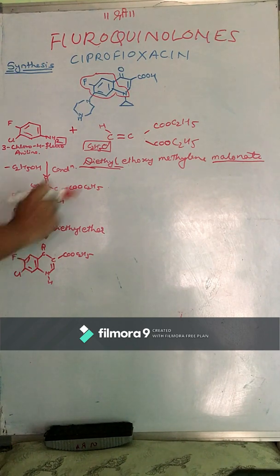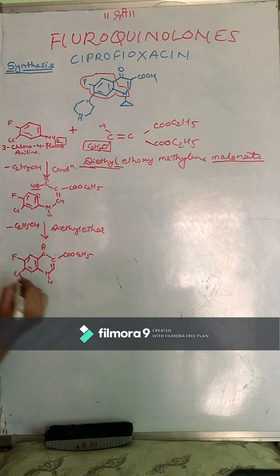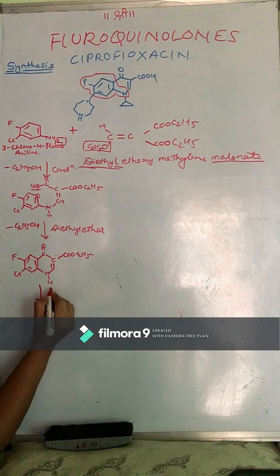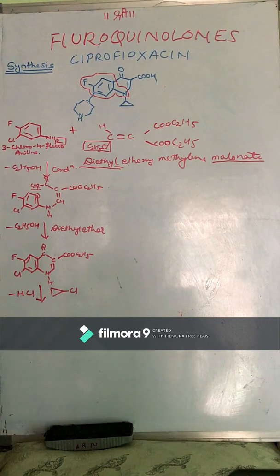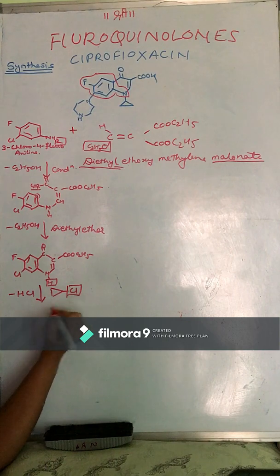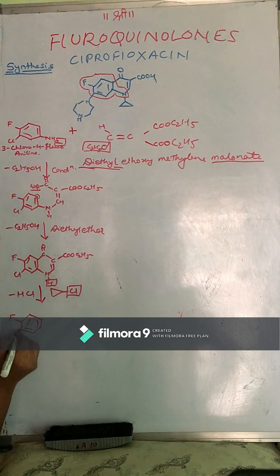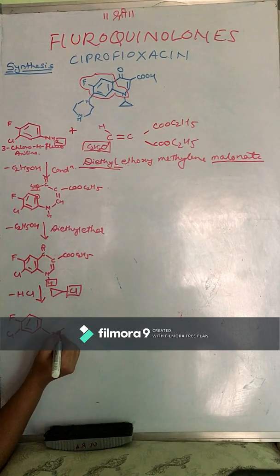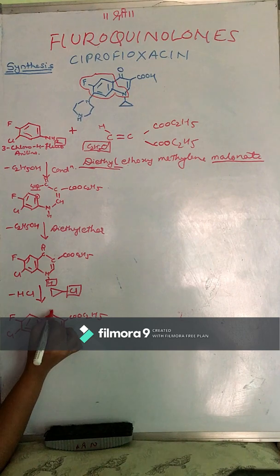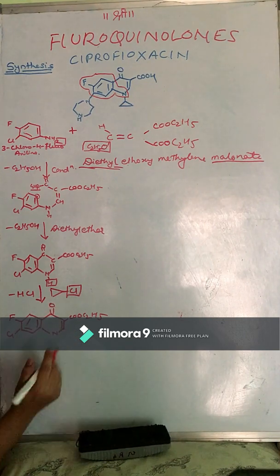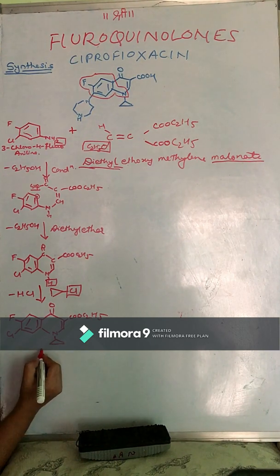The next step involves adding a cyclopropyl group at the first position. We use cyclopropyl chloride — one hydrogen from the nitrogen and Cl from the cyclopropyl chloride are lost in a condensation reaction. The resulting structure has chlorine, nitrogen, a COO-C2H5 ester group, an oxo group at the fourth position, and the cyclopropyl group at the first position.